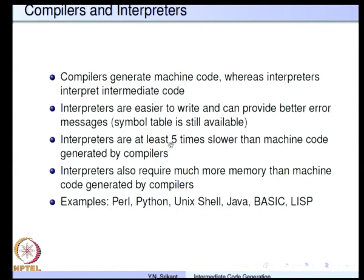The catch is interpreters are very slow — at least 5 times slower than the machine code generated by compilers. To offset this problem, the Java runtime system provides what is known as just-in-time compilation. In JIT compilers, the interpreter code is actually compiled into machine code and then run. This is very useful if the code is going to be run again and again, and in such cases JIT compilers are probably very close in execution speed to compiled code.